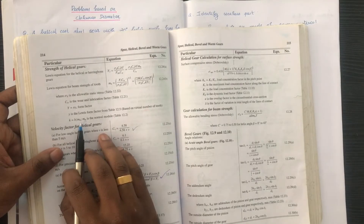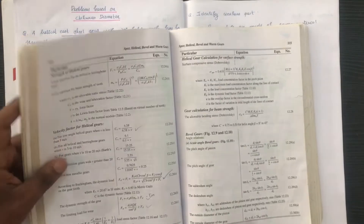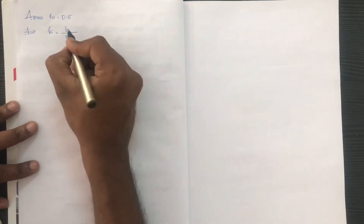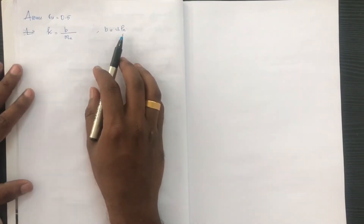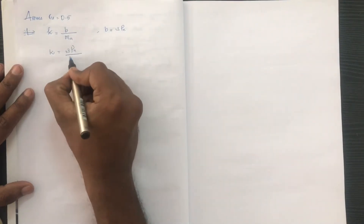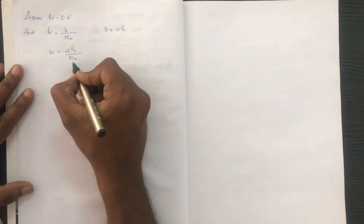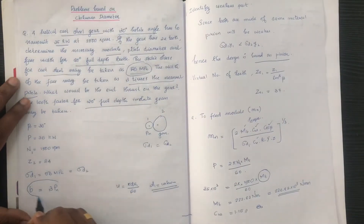The value of k is given by b divided by mn (face width to normal module ratio). We substitute B = 3 times Pn. So K = 3 Pn divided by mn. After substitution, K is equal to 15, which gives K = 15 approximately.